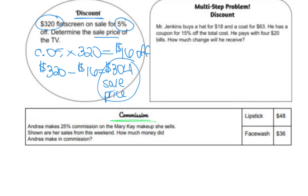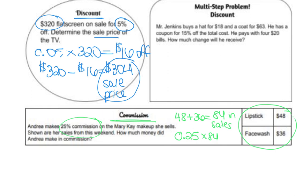Andrea makes 25% commission on the Mary Kay makeup she sells. Her sales from this weekend total $48 plus $36 equals $84 in sales. She makes 25% commission, meaning she earns 25% of her sales: 0.25 times $84 equals $21 in commission. For commission we don't add or subtract — she simply makes 25% of her sales.